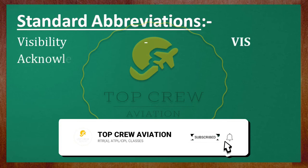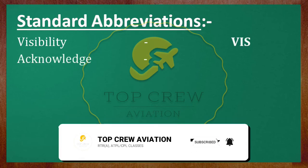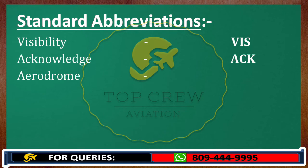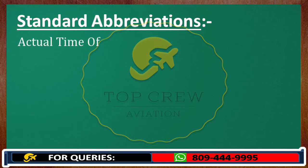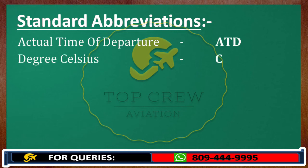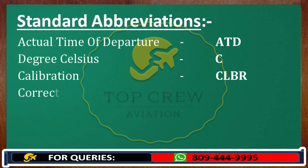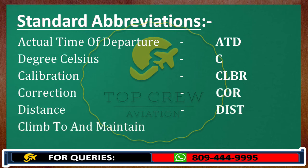Acknowledge — ACK. Aerodrome — AD. Again — AGN. Approach — APCH. Actual Time of Arrival — ATA. Actual Time of Departure — ATD. Degree Celsius — Charlie. Calibration — CLBR. Correction — COR. Distance — DIST. Climb to and Maintain — CTAM.